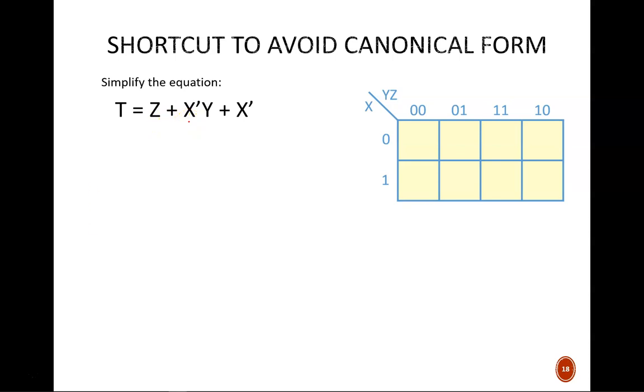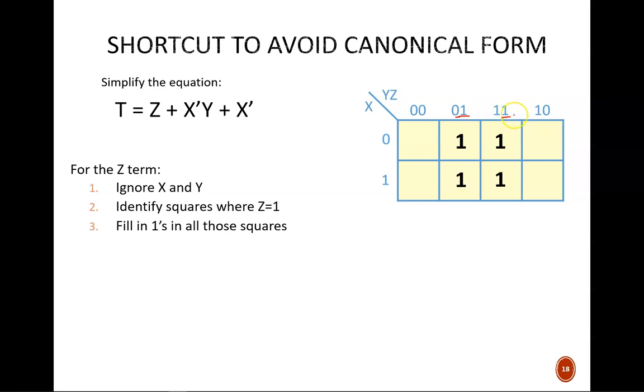Our first product term is simply Z, so on the k-map, identify each square where Z equals 1, regardless of X and Y. The first square is here, the next square is right next to it, and both squares underneath also have Z equal to 1. So that single product term led to four squares being filled in.